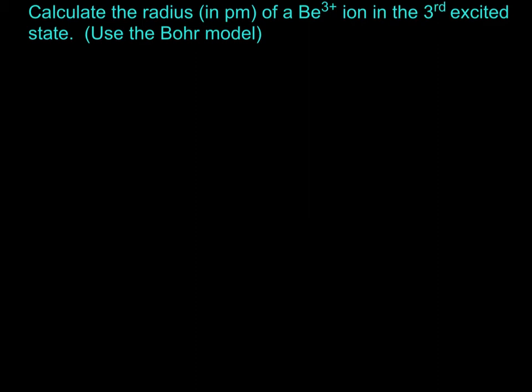Let's do a quick example showing how to calculate the radius of an ion in a certain n level or excited state, or the ground state, depending on the problem. We're using the Bohr model for this calculation.